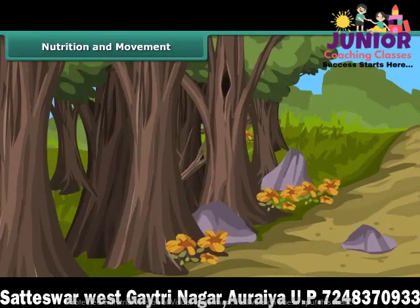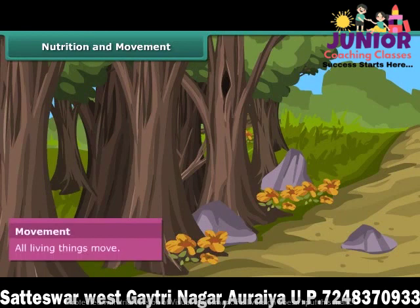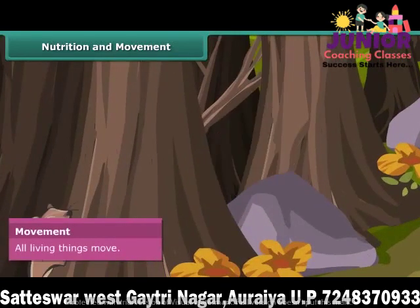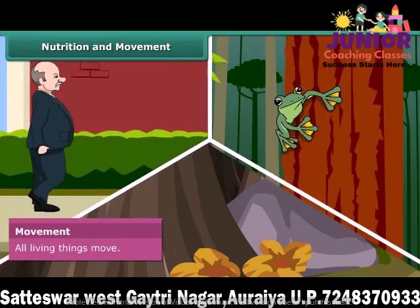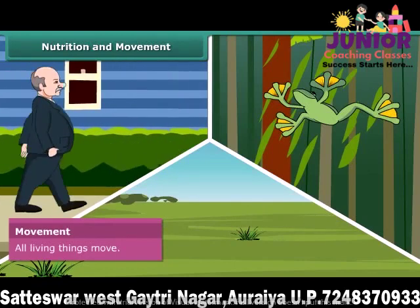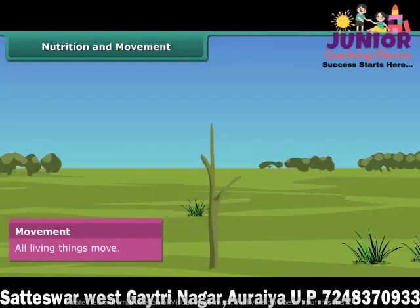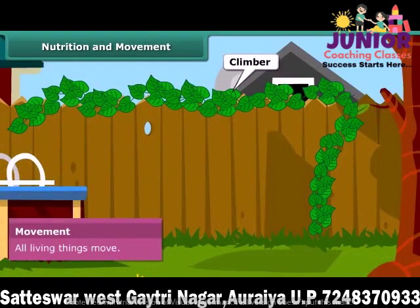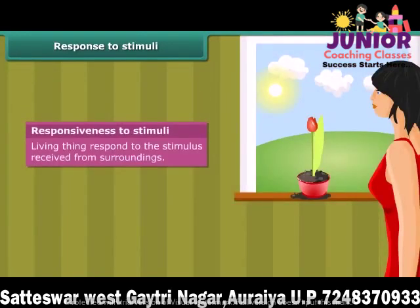Another important characteristic of living organisms is movement. All living things move by their own accord. People walk, frogs leap, snakes crawl — these are all actions of movement. Similarly, plants also make some movement but do not change their place. For example, gourd climbers move towards their support.